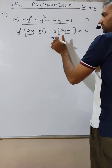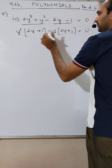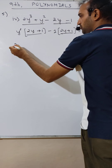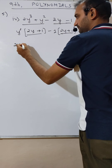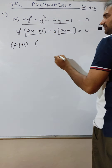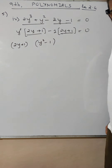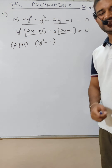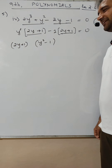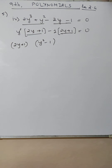In both groups, the common factor is 2y plus 1. So taking 2y plus 1 as common, what remains inside is y square minus 1. I think you understood — next step, you tell me what it will be. Let me see in the chat box what you reply.